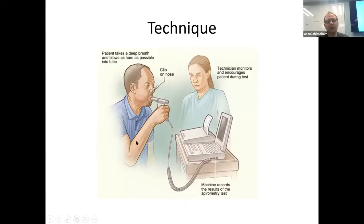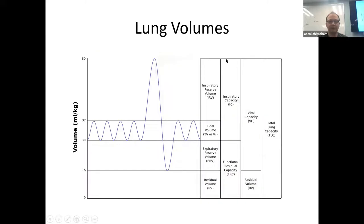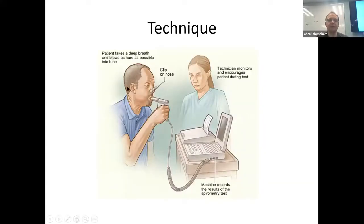For spirometry, the patient is hooked up to a closed circuit — their lungs and the computer become one continuous tube. A nose clip prevents extra air from escaping. The patient makes a maximum inspiratory effort to completely fill their lungs, then exhales as fast and aggressively as possible all the way to the expiratory reserve volume. This is done multiple times because it's important that the curves are similar to each other, showing good data, and to give the patient the chance to give their best effort, since the best effort is what's reported.